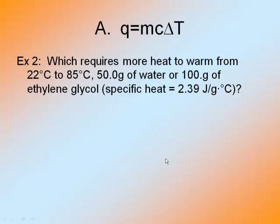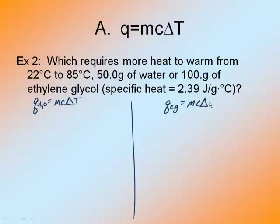It says, which requires more heat to warm from 22 degrees Celsius to 85 degrees Celsius, 50 grams of water or 100 grams of ethylene glycol? Specific heat of ethylene glycol is 2.39 joules per gram degree Celsius. There's two things going on here. I have to solve because it asks for which requires more heat. So I have the heat of water and the heat of ethylene glycol.